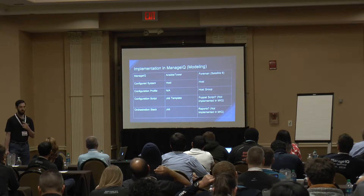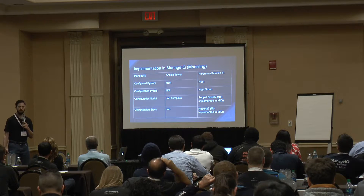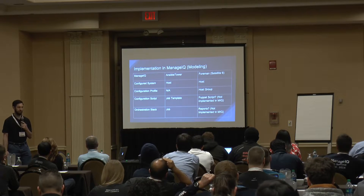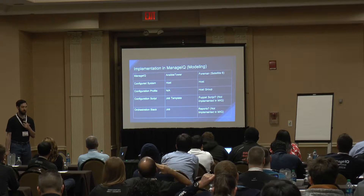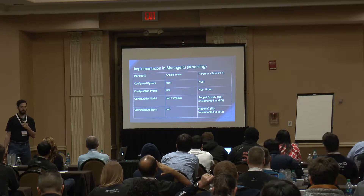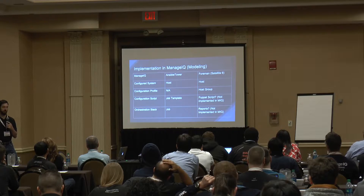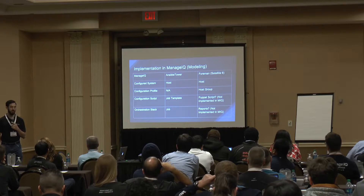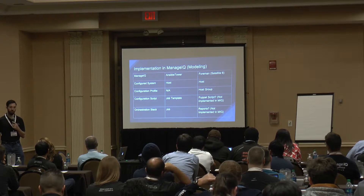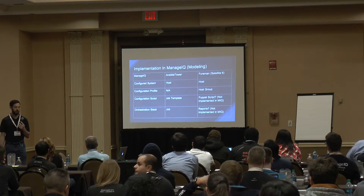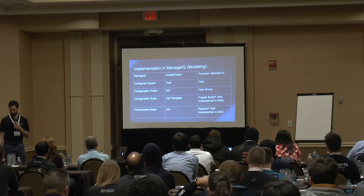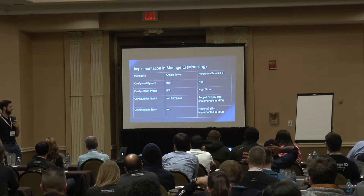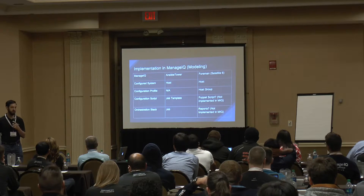In ManageIQ, when we added Foreman, we tried to make the modeling very generic so that it could be reused for other providers — we thought maybe Chef or Ansible would be a future provider. So we called things like configured systems for hosts and came up with configuration profiles and scripts. We reused some of the orchestration stack modeling for the Ansible Tower jobs. And in the future, we may be able to enhance the Foreman integration to use some of the newer things we added for Ansible Tower.